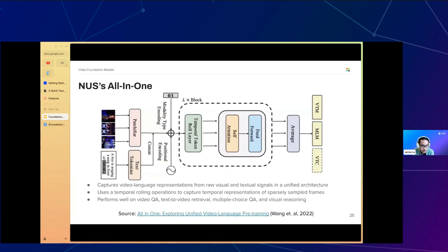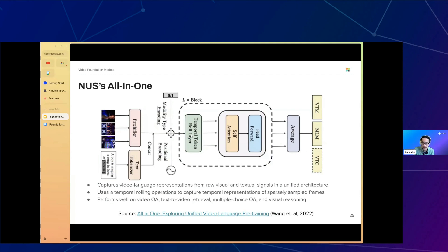All-in-One, from the National University of Singapore, is a video-language model designed for pre-training that can capture video-language representations from raw visual and textual signals in a unified backbone architecture. It uses a temporal token rolling operation to capture temporal representations of sparsely sampled frames without adding extra parameters or increasing time complexity — the key approach to capturing the temporal dimension. It performed well on four downstream video-language tasks: video question answering, text-to-video retrieval, multiple choice Q&A, and visual common sense reasoning.